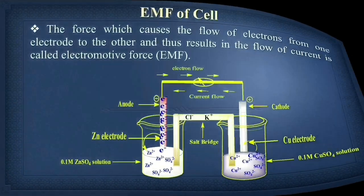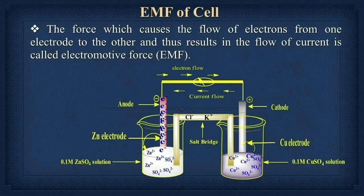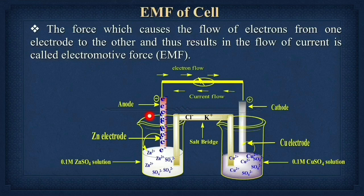Now let us discuss the EMF of the cell — the electromotive force. We already talked about the definition of electromotive force when we discussed the galvanic cell, where oxidation of zinc and reduction of copper is observed. The force which causes the flow of electrons from one electrode to the other, and thus results in the flow of current, is called electromotive force. In the galvanic cell, electrons flow from the zinc electrode to the copper electrode, and in the opposite direction there is a flow of current.